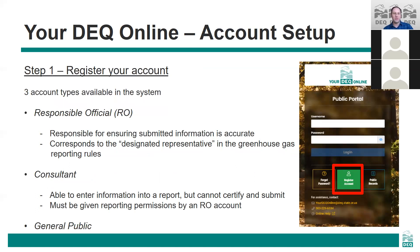There are three types of accounts available in Your DEQ Online and the two that can be used for greenhouse gas reporting are the responsible official and consultant accounts. A responsible official, or RO, is an individual at your company who will be responsible for signing and submitting the report to DEQ. This corresponds to the designated representative referenced in the greenhouse gas reporting rules. A consultant may be any individual entering data into the greenhouse gas report but not responsible for signing and certifying the data — this might be a consultant you've hired or more likely an individual within your company responsible for gathering and entering that data. If you have multiple people with RO accounts, they can all enter data into the same report, and the RO who actually signs to certify the accuracy of the data and submits the report will be considered the RO for the report.